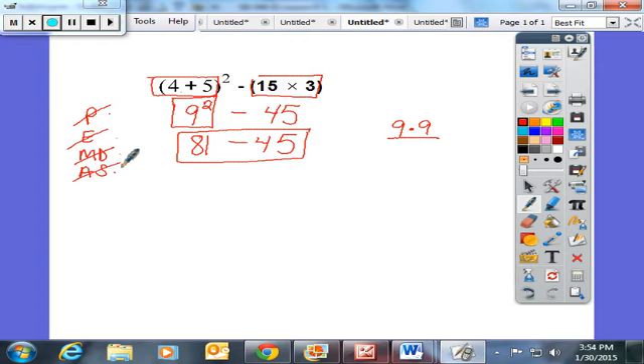There's no multiplication or division. So, finally, I'm going to add or subtract. 81 minus 45 is going to give you a difference of 36. That's the order of operations review.